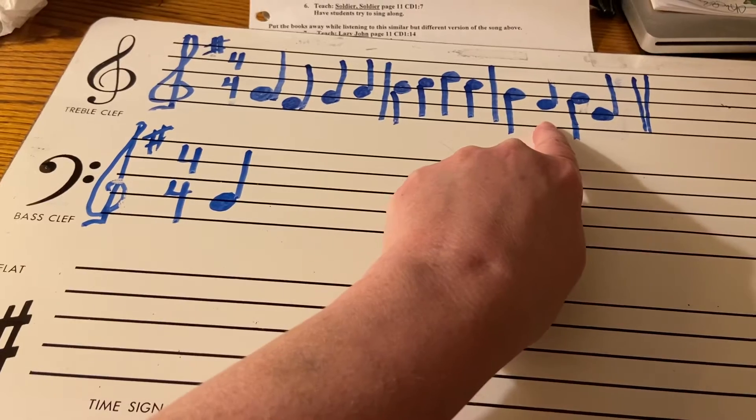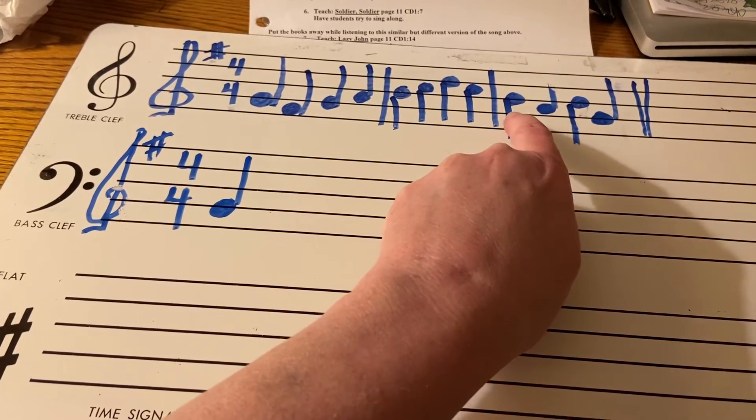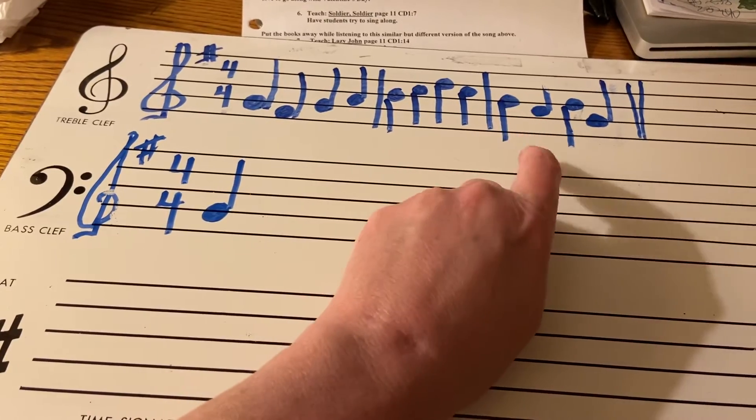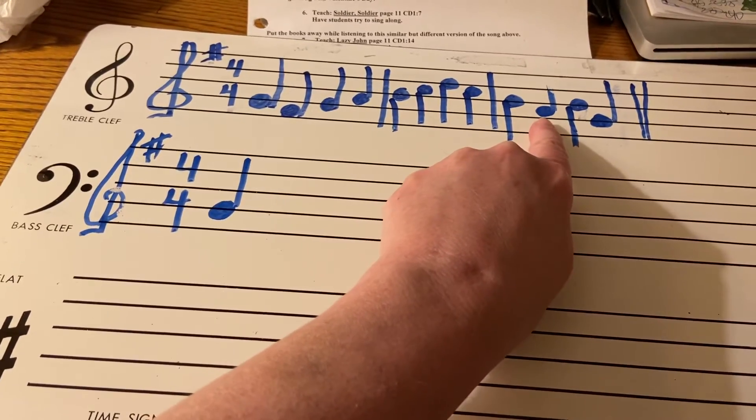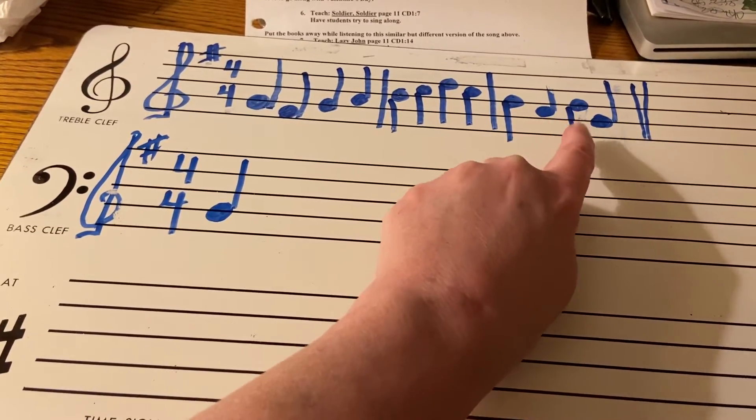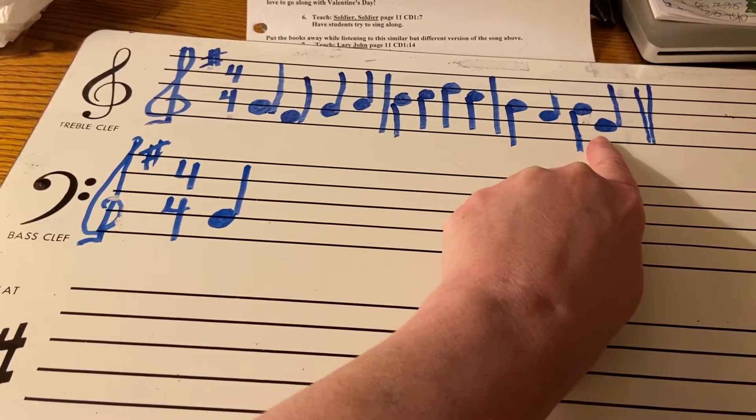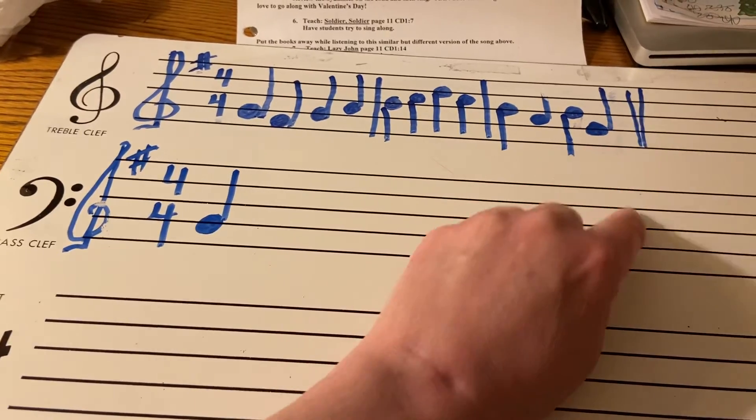So this one is a perfect example. You have down and on the left here because it's on the third line up, then because it's in the second space up, it's up and on the right, you're back to the third line up, so it's down and on the left, and then because it's below the third line, this one is up on the right.